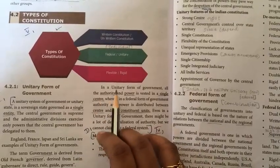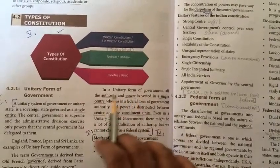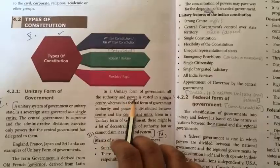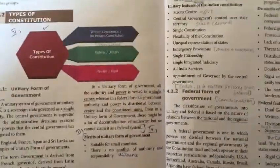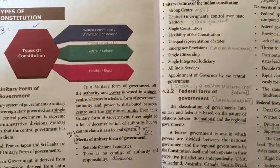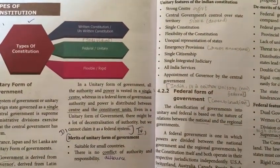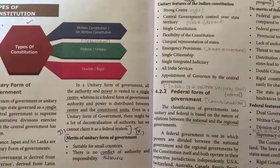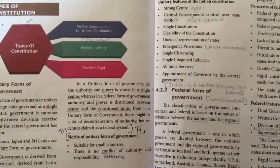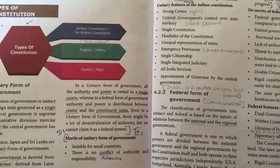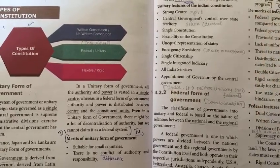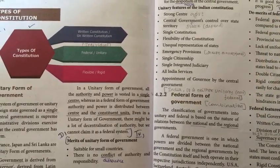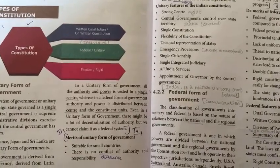In a unitary form of government, all authority and power is vested in a single center. Whereas in the federal form of government, authority and power is distributed between the center and constituent units. So in unitary, powers are under a single center, but in federal, the power is distributed.